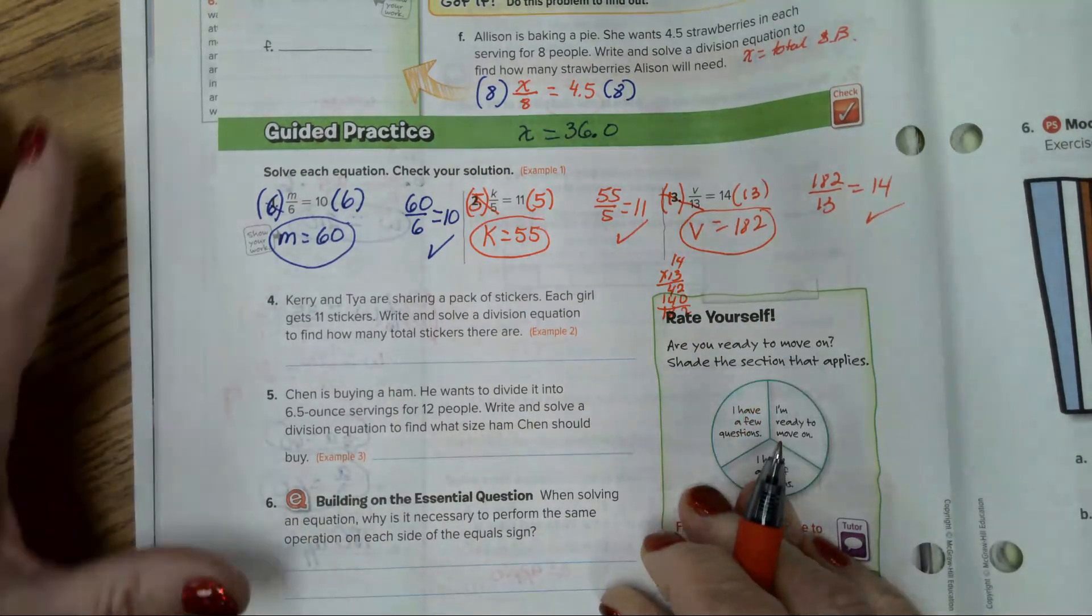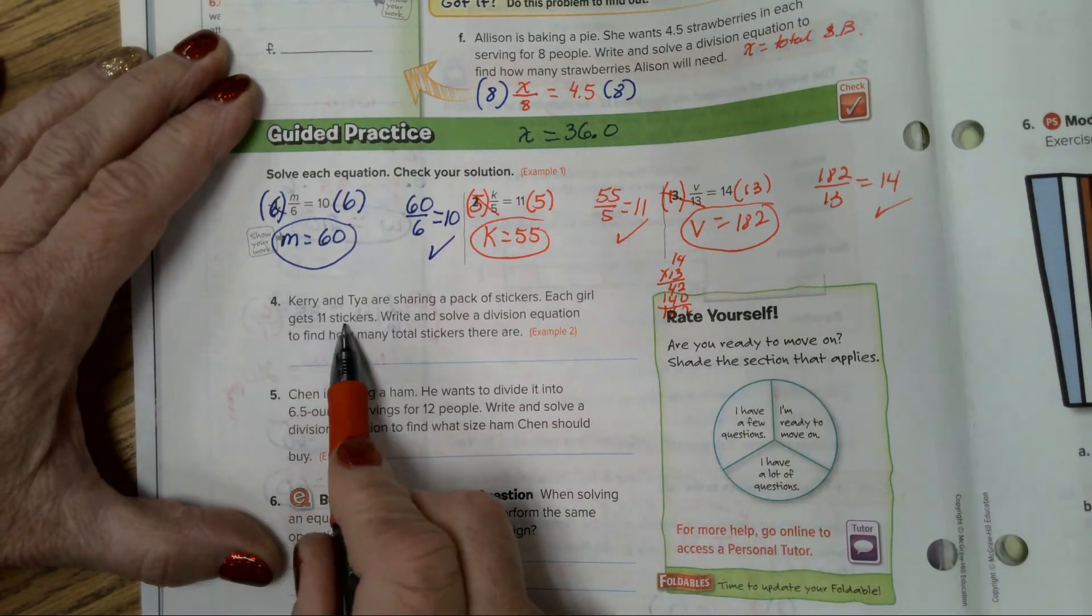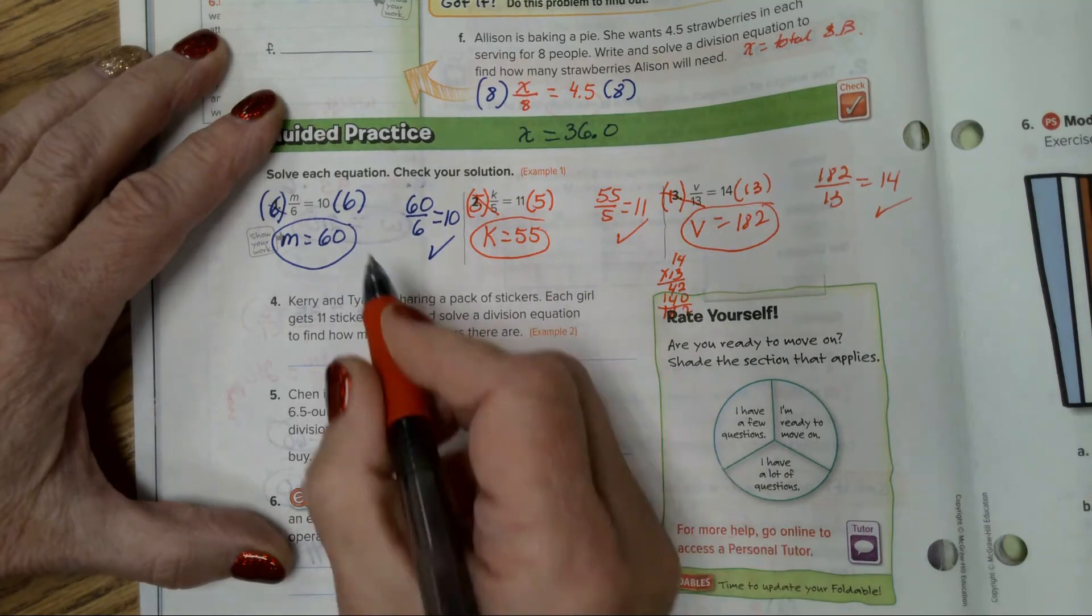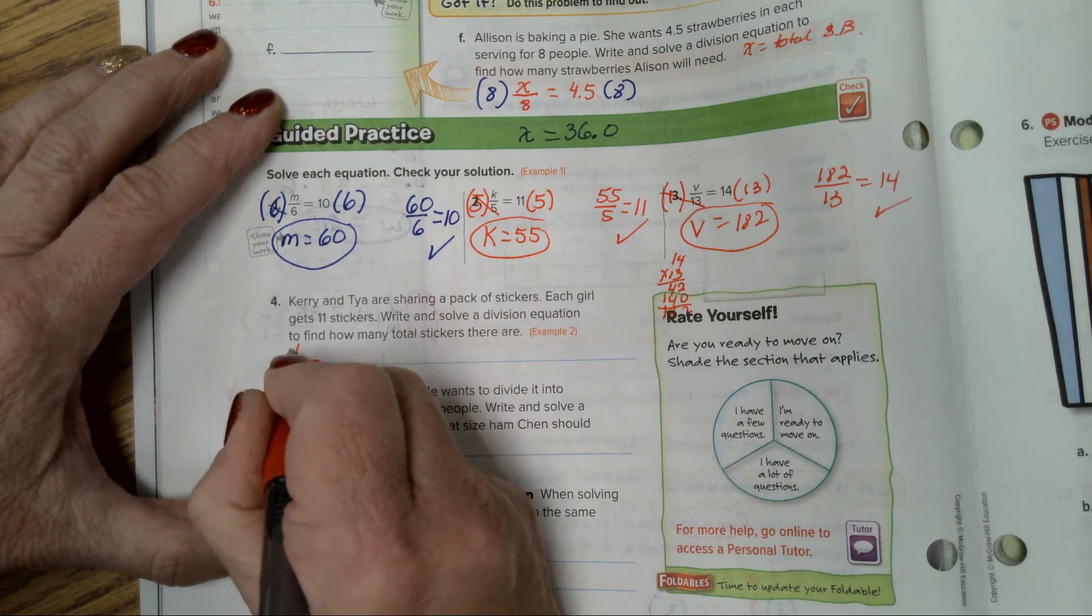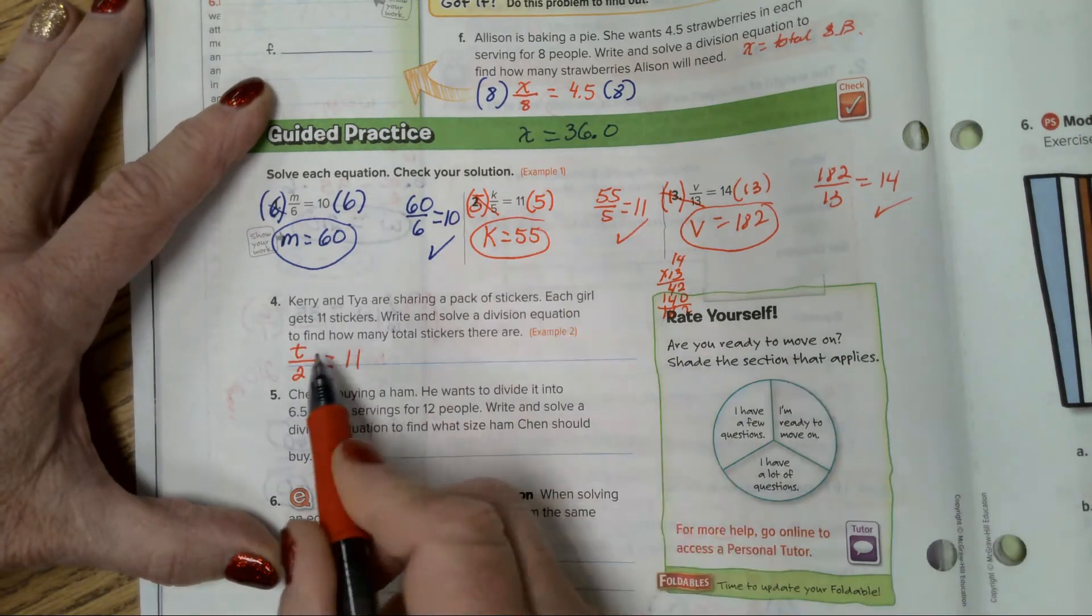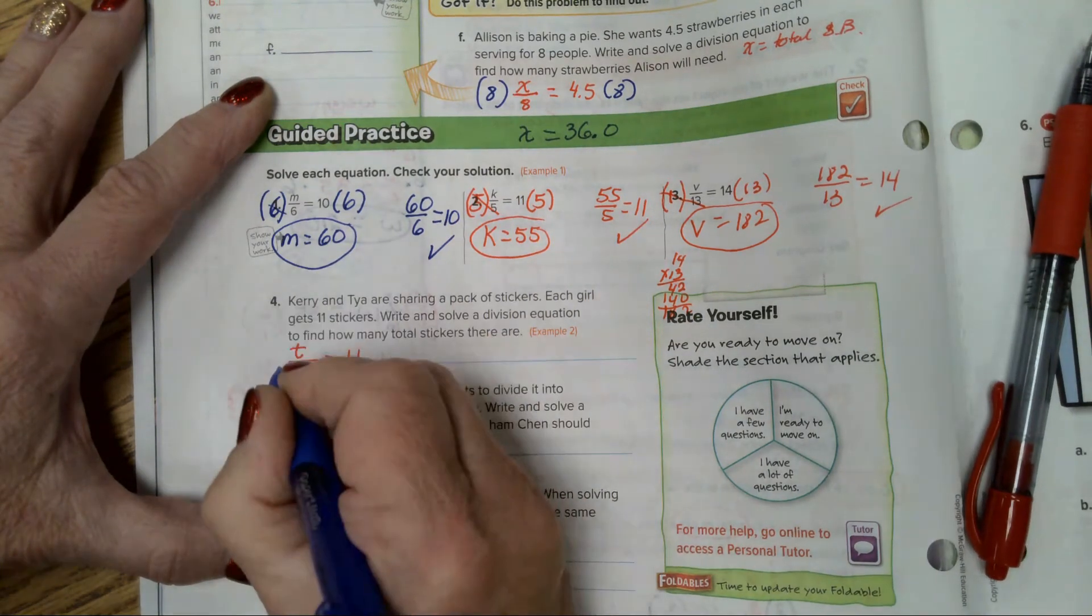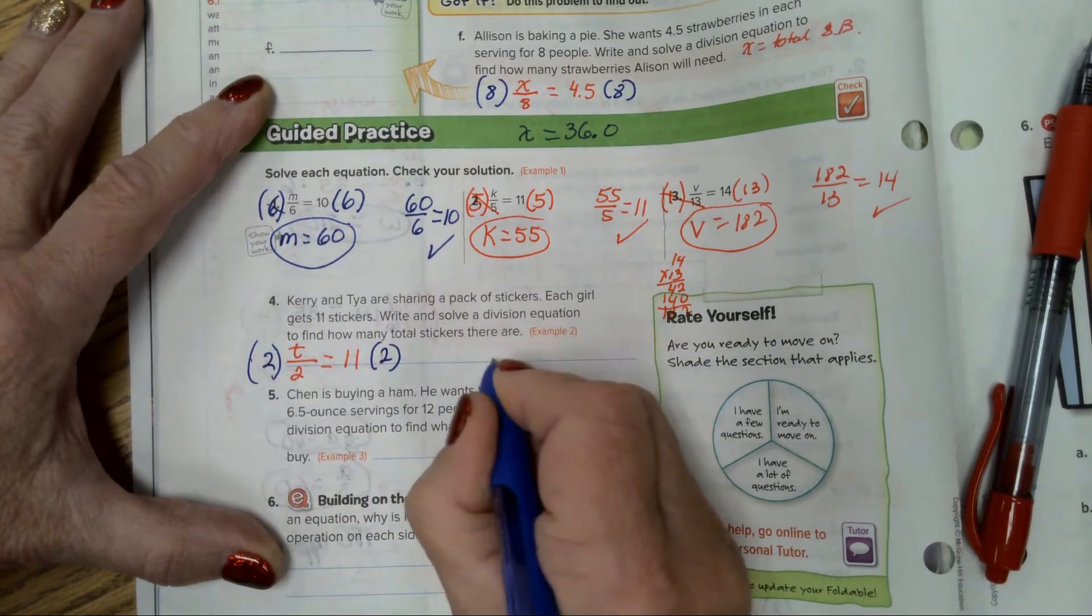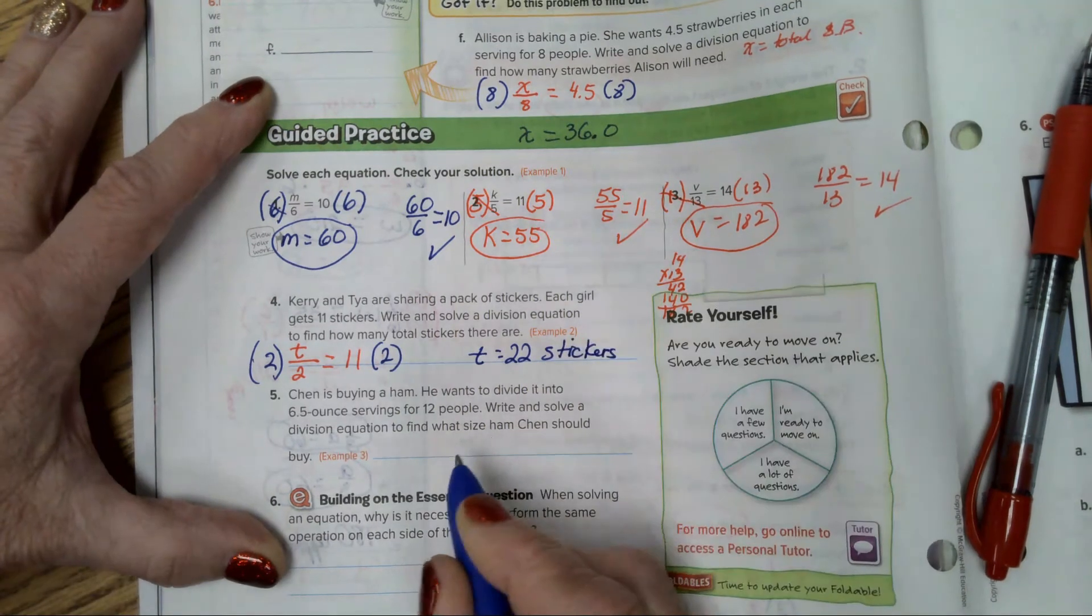Now, in question 4. Carrie and Taya are sharing a pack of stickers. Each girl gets 11 stickers. Write and solve a division equation to find how many total stickers there are. So each girl gets 11 stickers. You are taking the total of stickers divided by 2 equals 11. That's the division equation. Total stickers divided by 2 equals 11. Each girl gets 11. So how many stickers did they have at the beginning? Well, you just multiply both sides by 2, and the answer is T equals 22 stickers.